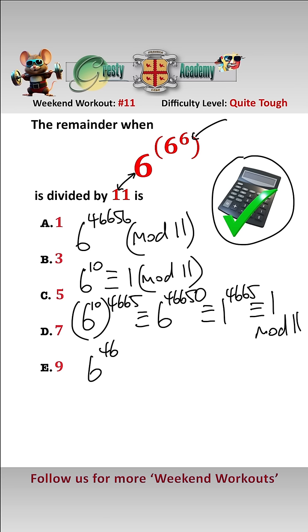So 6 to the power of 46656 is equal to 1 times 6 to the 6, which is equal to 46656 mod 11. Now there's a great way of finding out for smaller numbers like this what the remainder when you divide by 11 is.